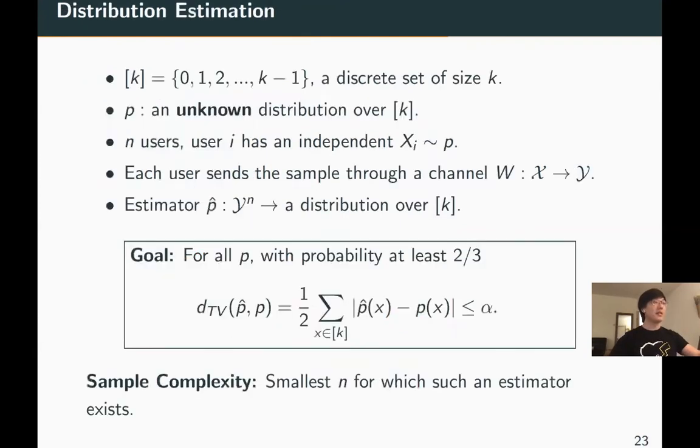To study how these privacy notions lead to utility improvement, we consider the task of distribution estimation. There is a known alphabet of size k and unknown distribution p over the alphabet. N users each observe an independent element from the distribution and pass their sample through a channel W. The goal is to come up with an estimator which estimates the distribution based on the output of the channels. Moreover, the estimator has to estimate the distribution up to accuracy alpha and succeed with probability at least two-thirds. The sample complexity is defined as the smallest number of samples for which such an estimator exists.